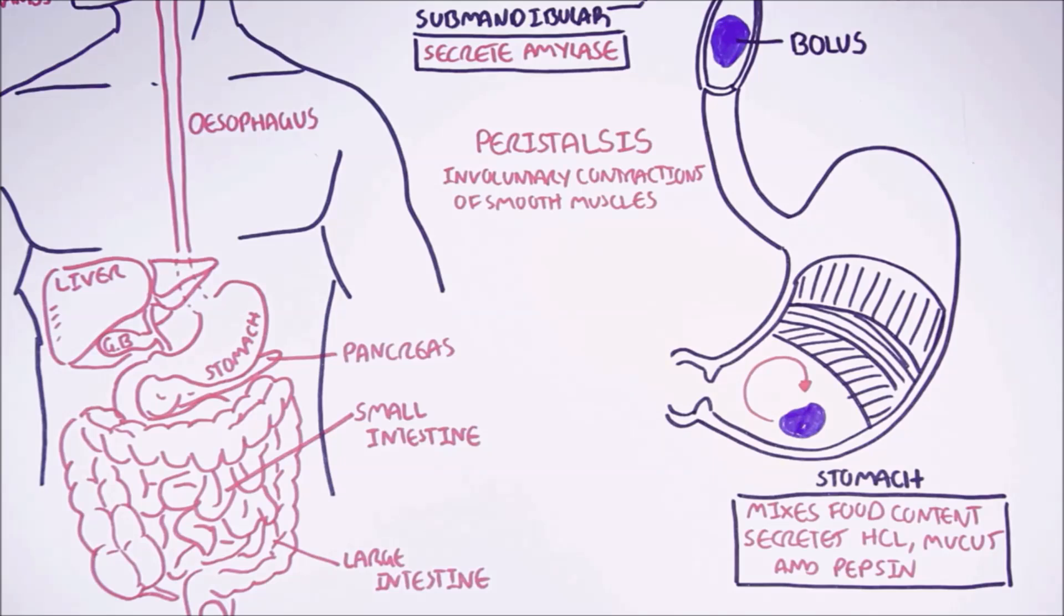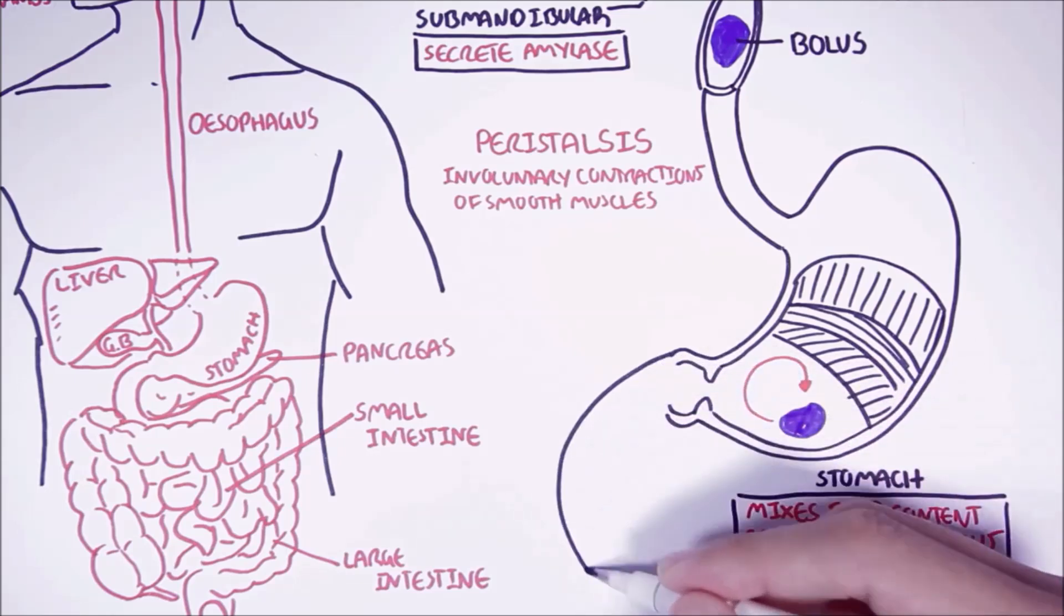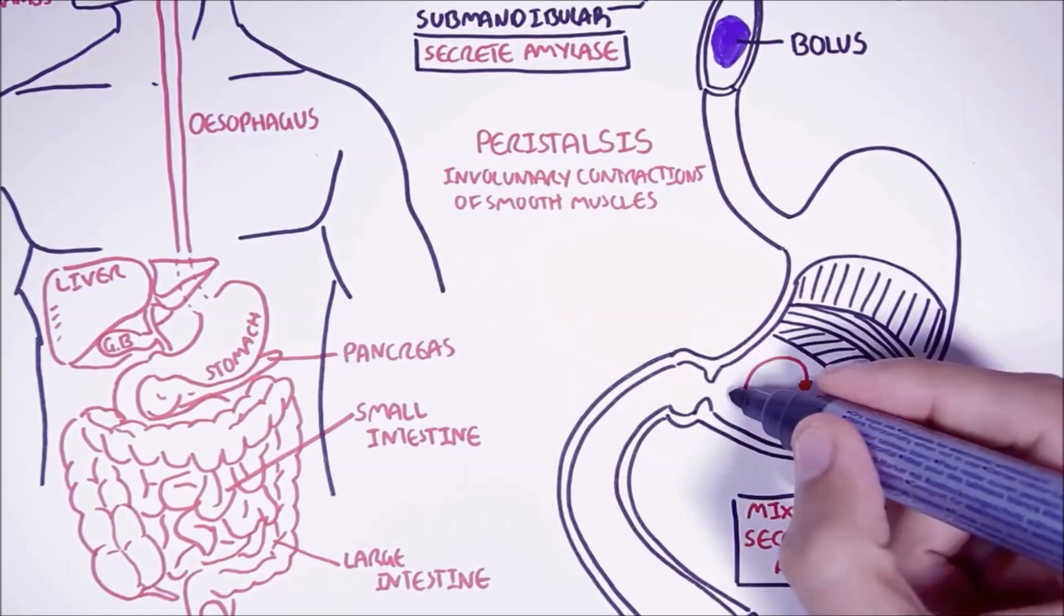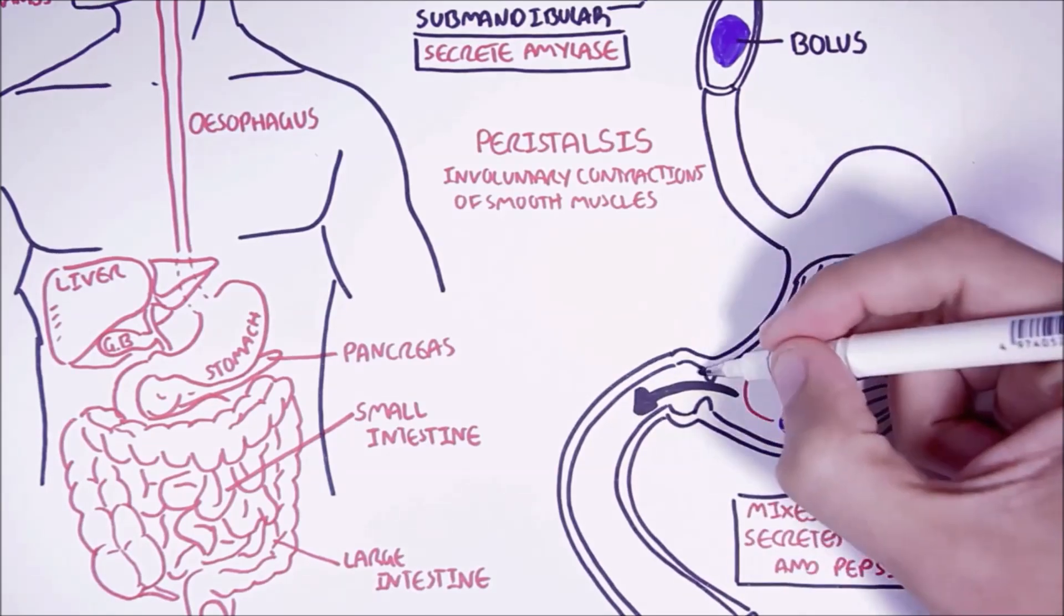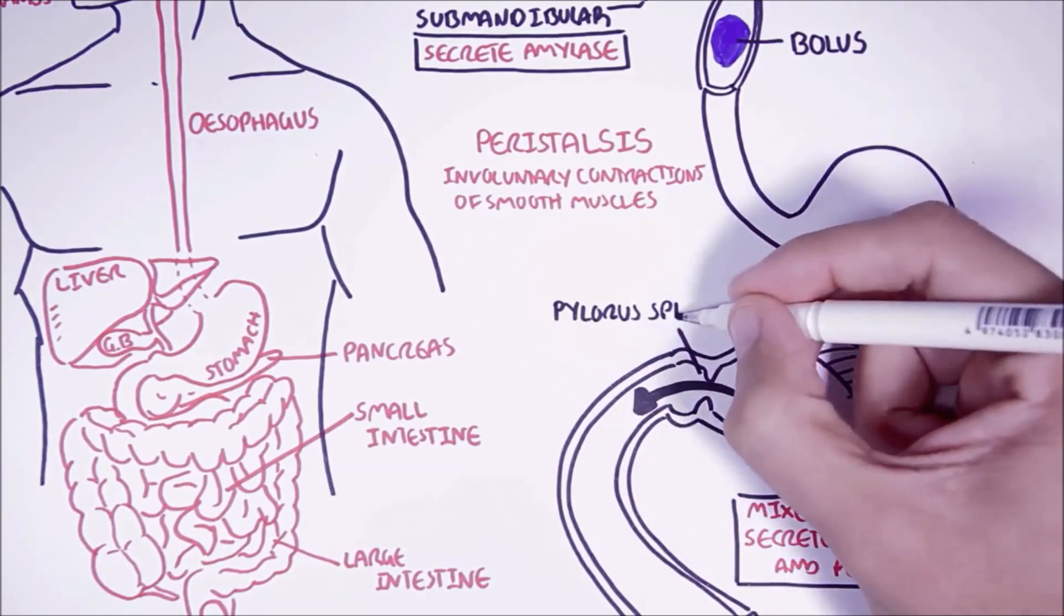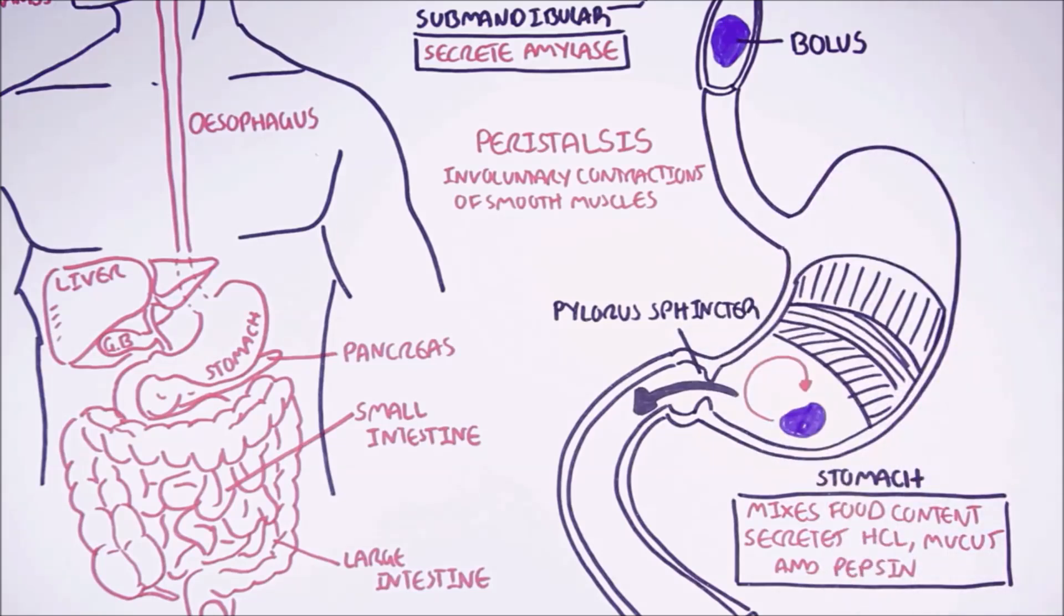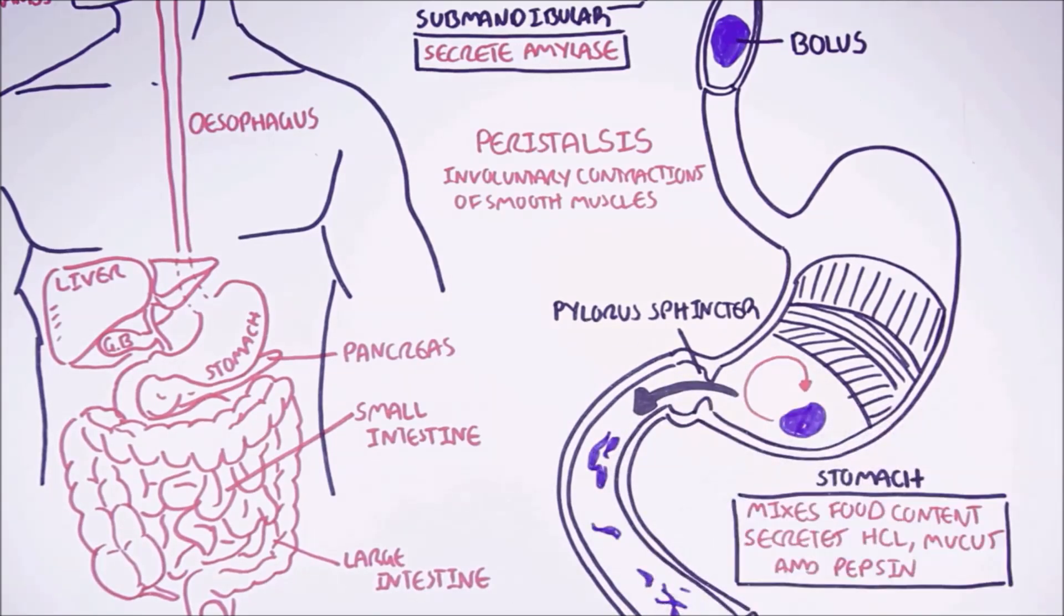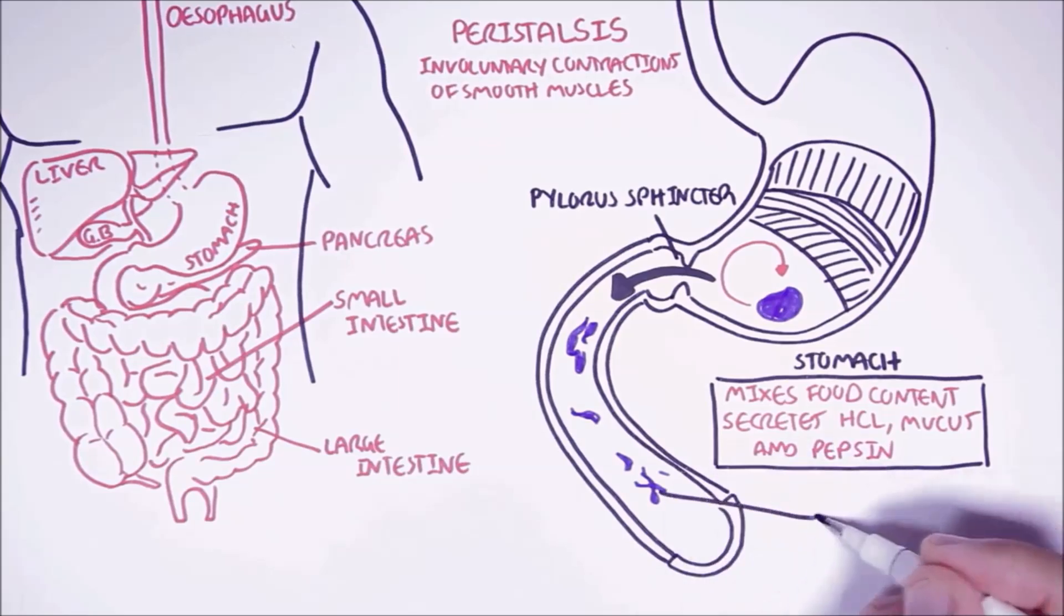The vigorous contraction of stomach muscles and the stomach secretions results in the liquification of the food, which is then slowly released into the small intestine. The pylorus sphincter is the barrier between the stomach and the small intestine. During digestion, the pylorus sphincter opens in phases allowing the liquified food, now referred to as chyme, to enter the small intestine.